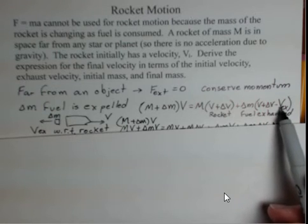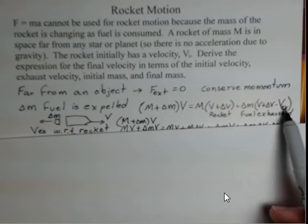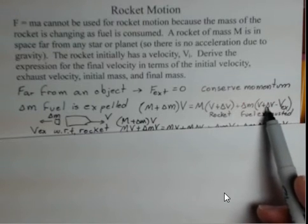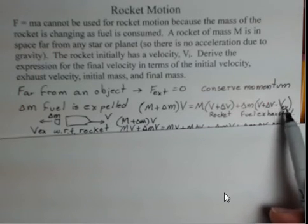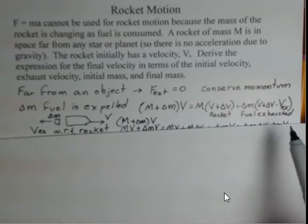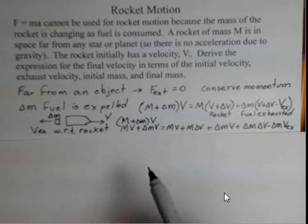This exhaust velocity is with respect to the rocket. So I have to include the velocity of the rocket and the new velocity of the rocket. And then our exhaust velocity, our fuel coming back to the left from these. But this exhaust velocity with respect to the rocket, this gives us the correct velocity from our point of view off to the side of the rocket.